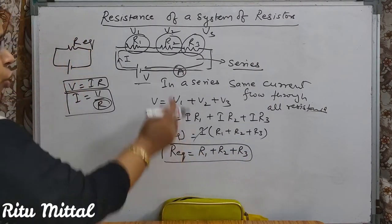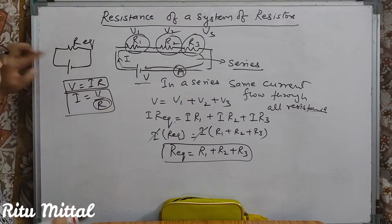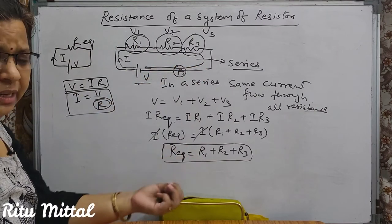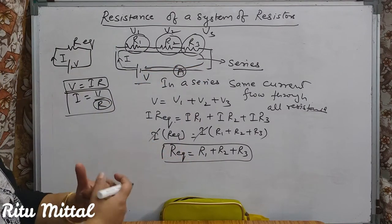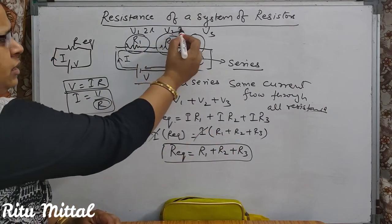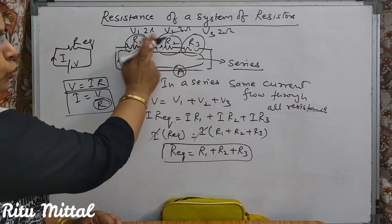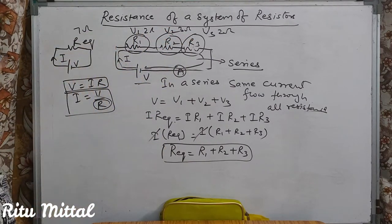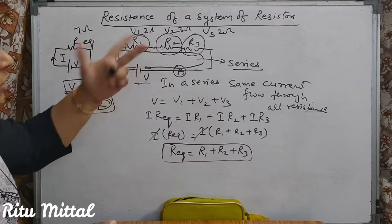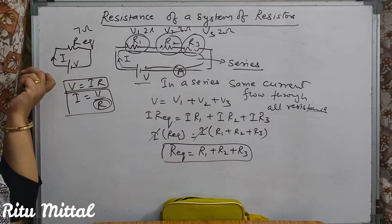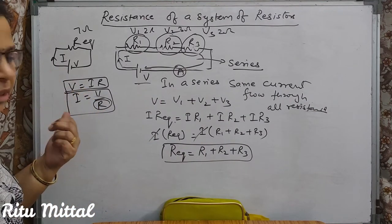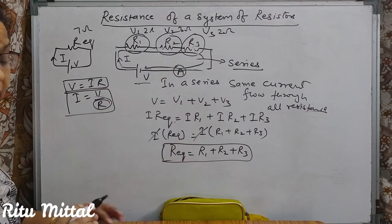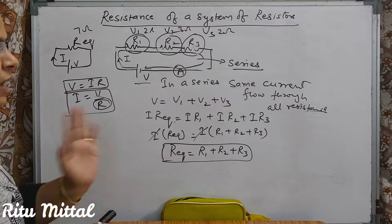If you choose the R equivalent, then you will have the same current flow in the circuit as with the three resistors. We will take the algebraic sum of all resistances. For example, if values are 2 ohms, 3 ohms, and 2 ohms — total resistance: 2+3=5, 5+2=7 ohms. This is the derivation for R equivalent when resistances are connected in series — very important, these type of questions are asked in the examination.